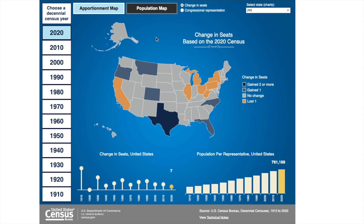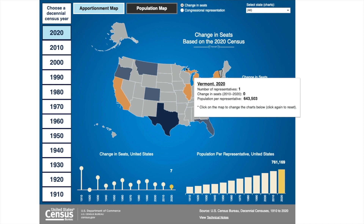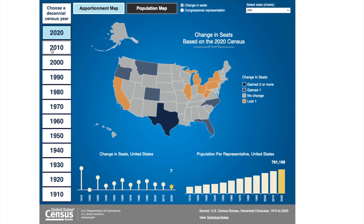Now let's check the features of the apportionment map. The default view shows data for the United States. You can use this map to see the change in seats — the states that gain or have lost a seat according to the 2020 census apportionment results. You can use the left sidebar to choose a new decennial census year and see changes over time.